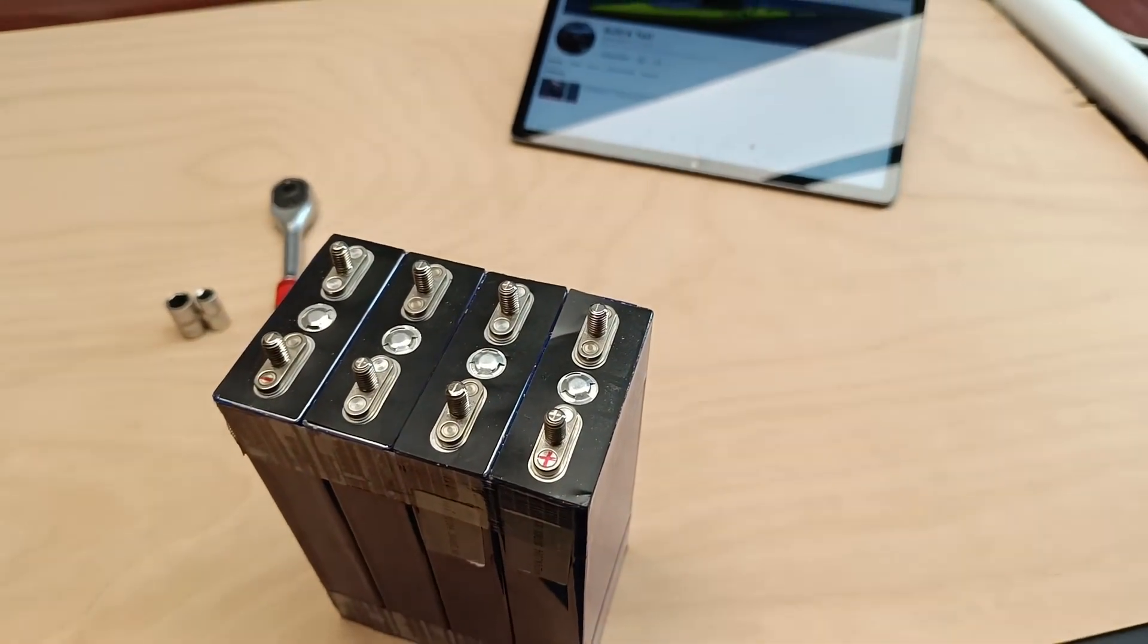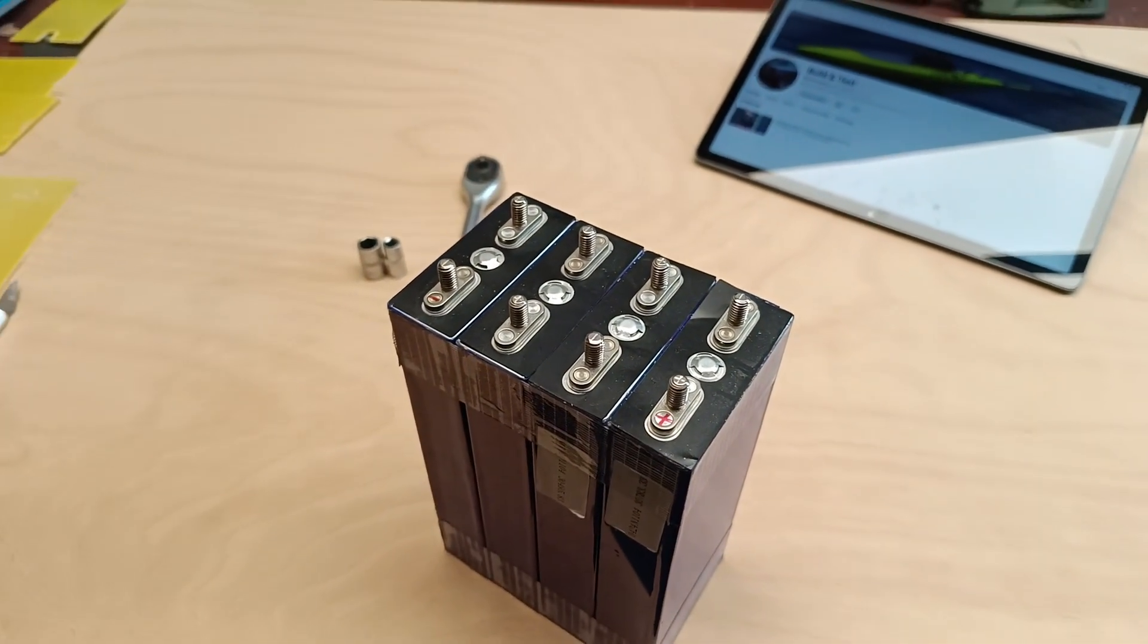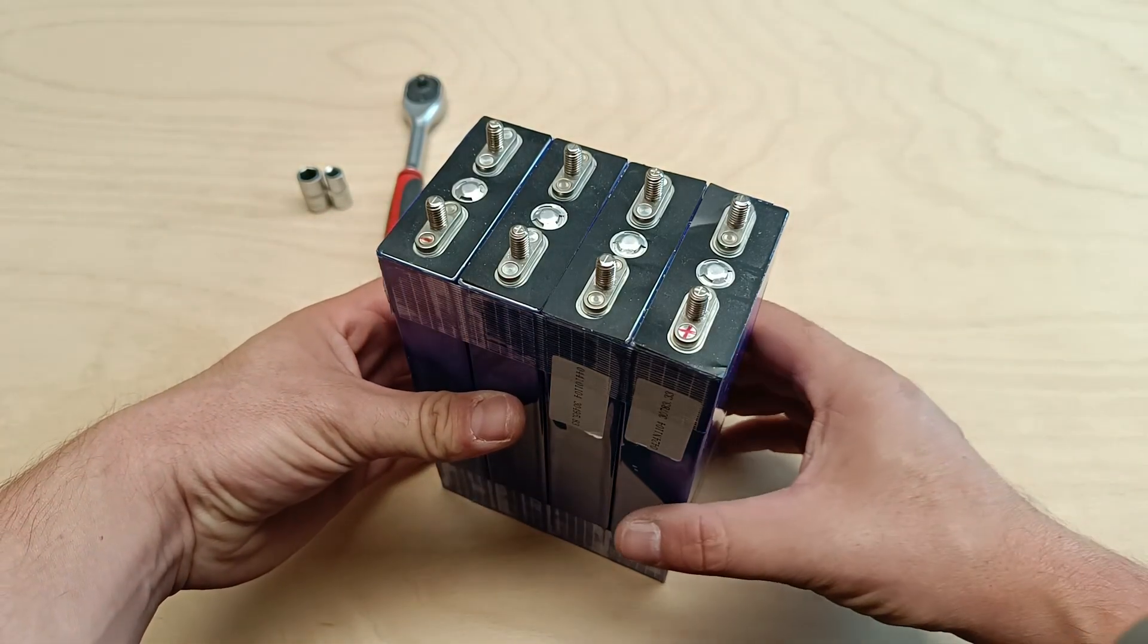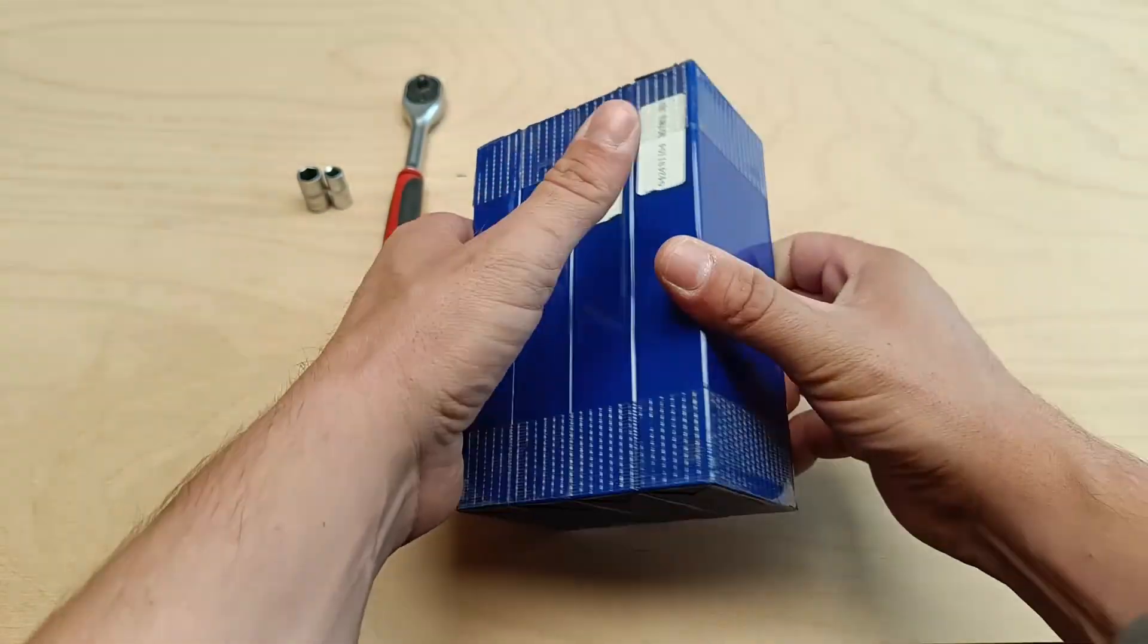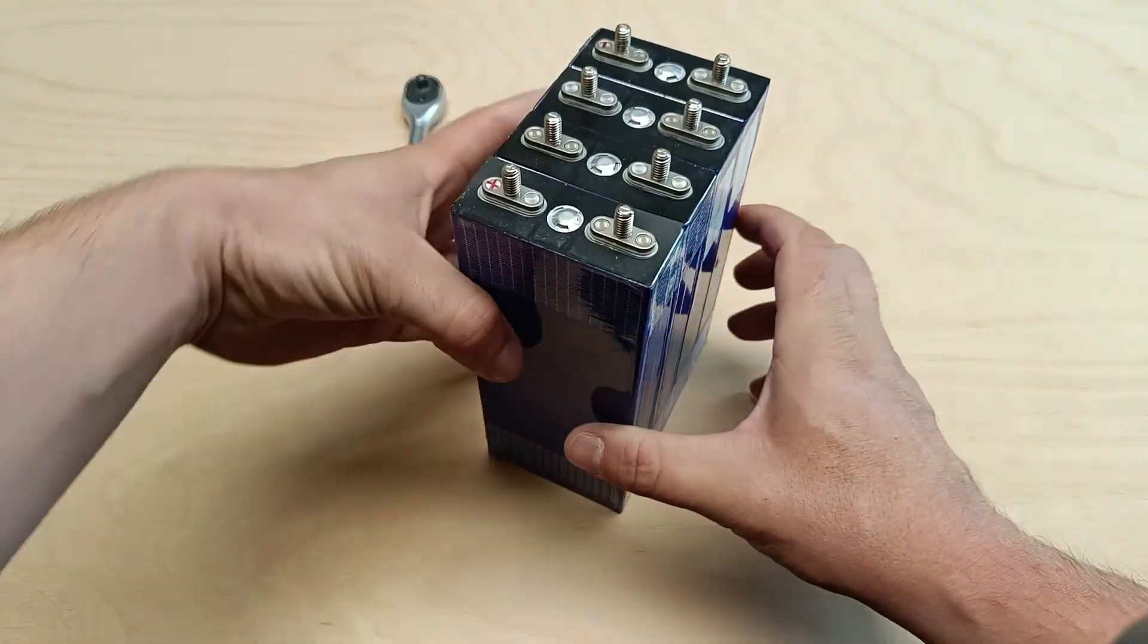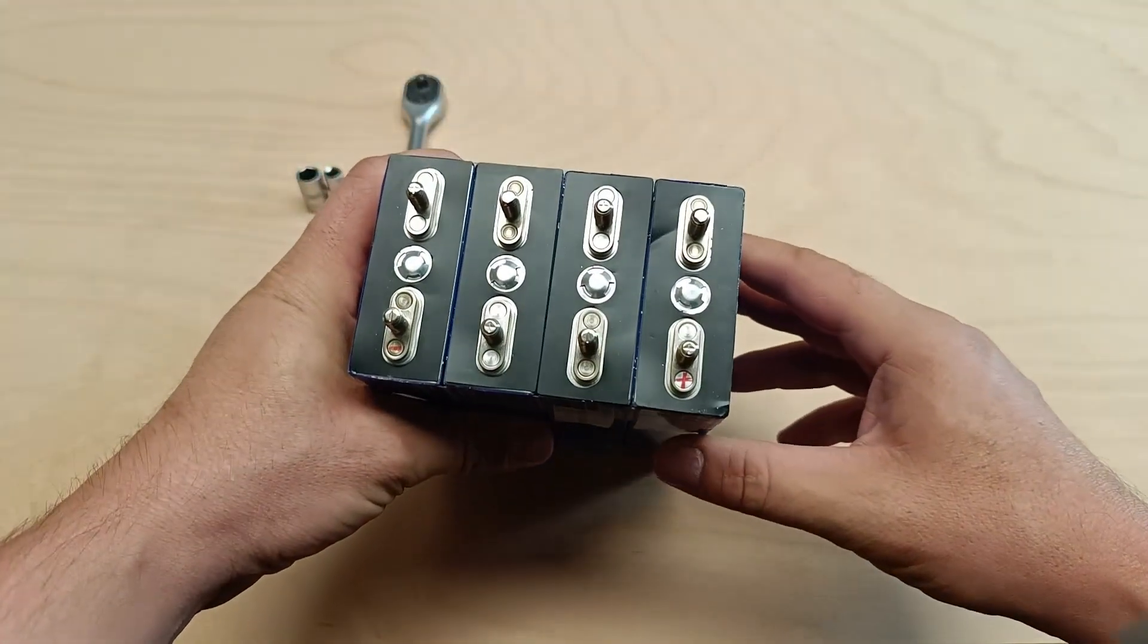Hello everyone. In today's video, we're going to build a 12.8 volt 30 amp hour lithium iron phosphate battery managed by a 50 amp Jabida BMS. I'll guide you through the entire build process, explaining the key features of the battery and the BMS. Stick around.